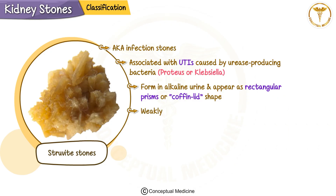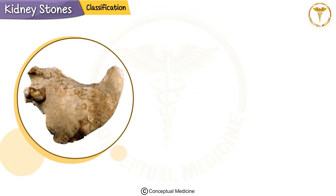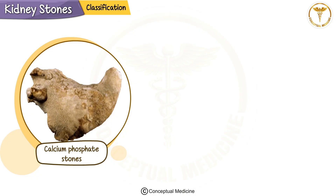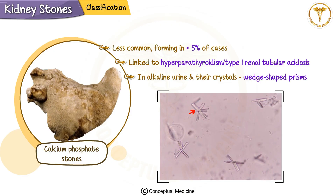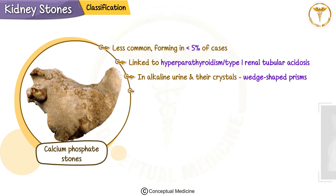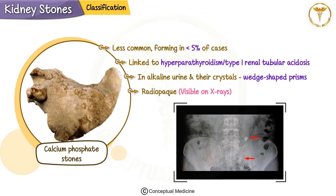Struvite stones are only weakly radiopaque, so they may be harder to detect on imaging. Calcium phosphate stones are less common, forming in fewer than 5% of cases, and are usually linked to hyperparathyroidism or type 1 renal tubular acidosis. These stones also form in alkaline urine, their crystals are wedge-shaped prisms, and they are radiopaque — visible on x-rays.